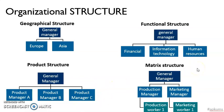Sometimes certain companies have a matrix structure. Matrix structure means a worker — for example, a production worker — reports directly to a production manager. But at the same time, the production worker and a marketing worker work together in a team and report to a team leader, a different person. So a production worker might have two managers: one production manager and one team leader to report to in the organization.